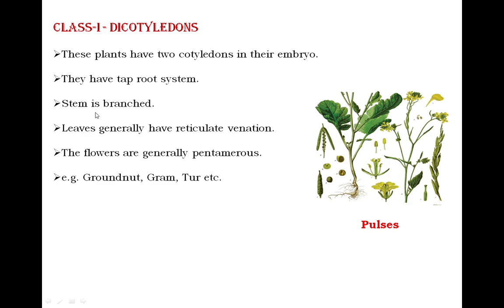In dicotyledons, the stem is branched — unlike monocots where the stem is unbranched or rarely branched. Regarding leaf venation, dicotyledonous plants have reticulate venation. In the leaf, there is a central midrib, with parallel veins on the sides, and within those are smaller veins that intersect each other, forming a net-like pattern — this is called reticulate venation.